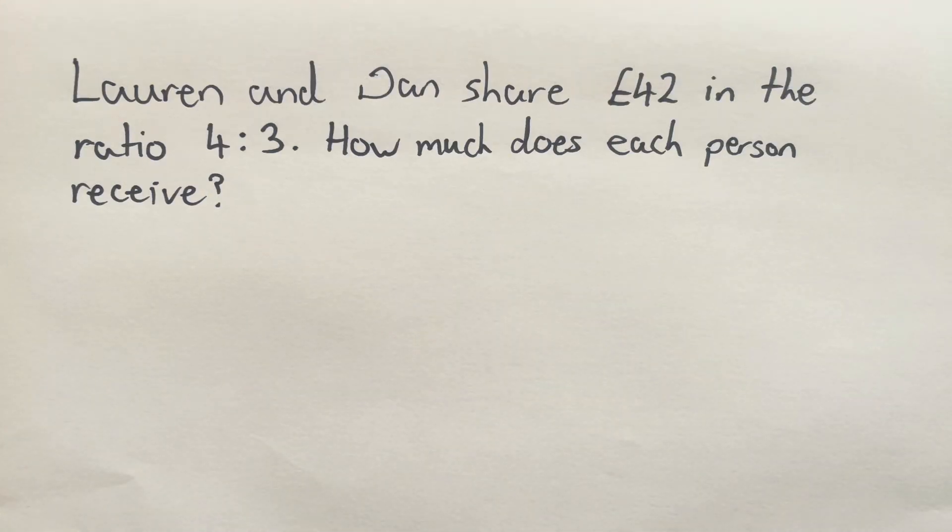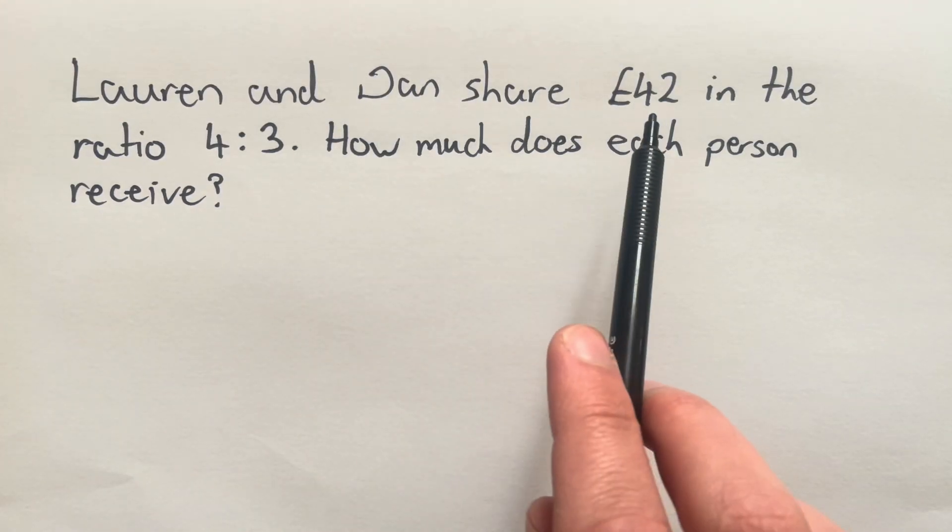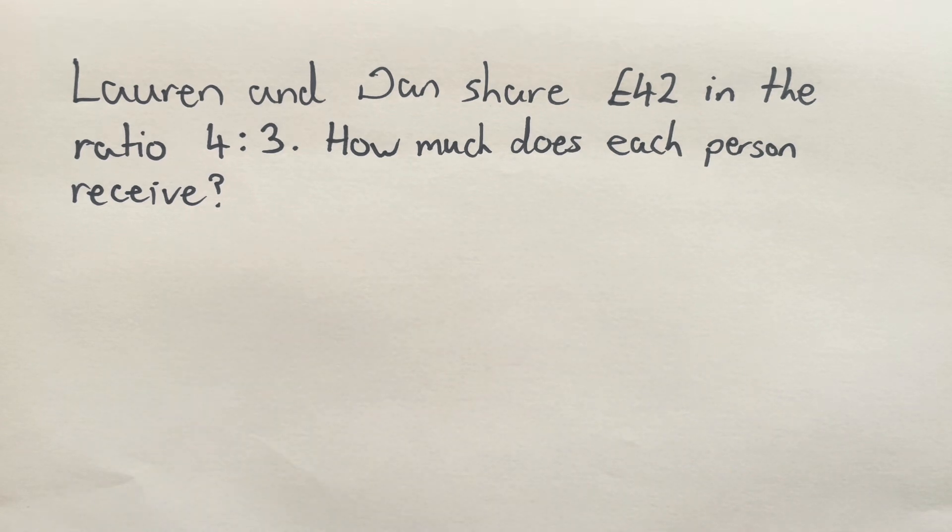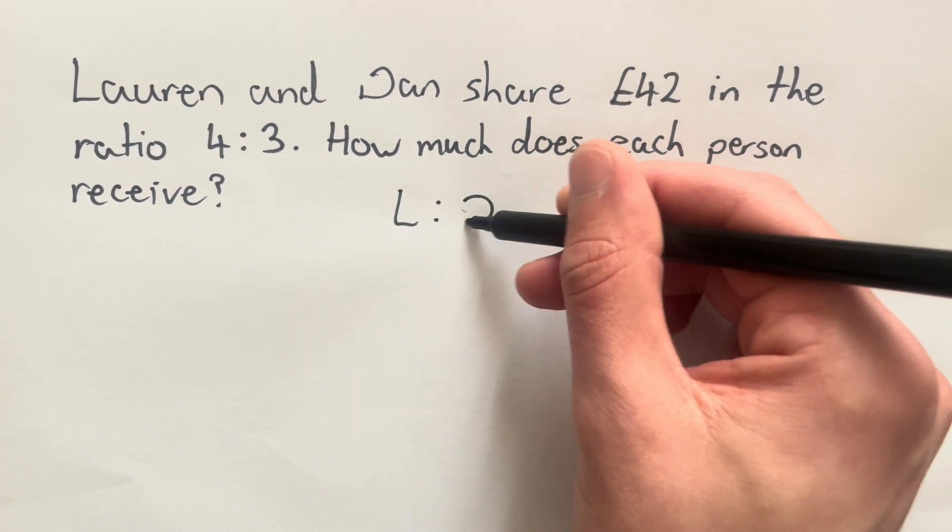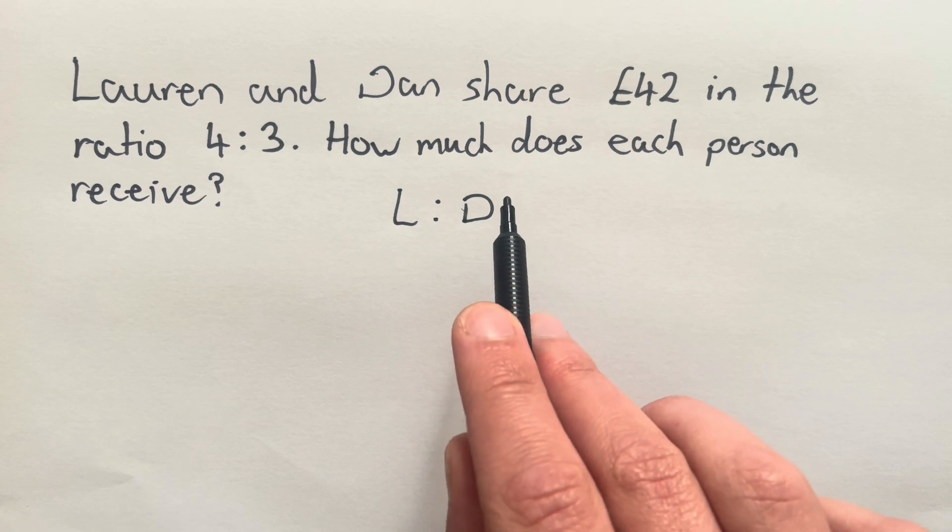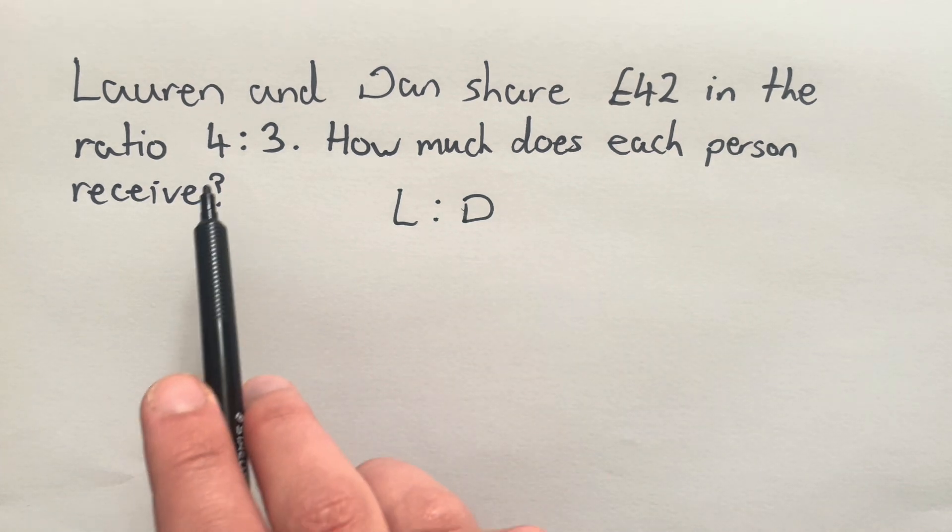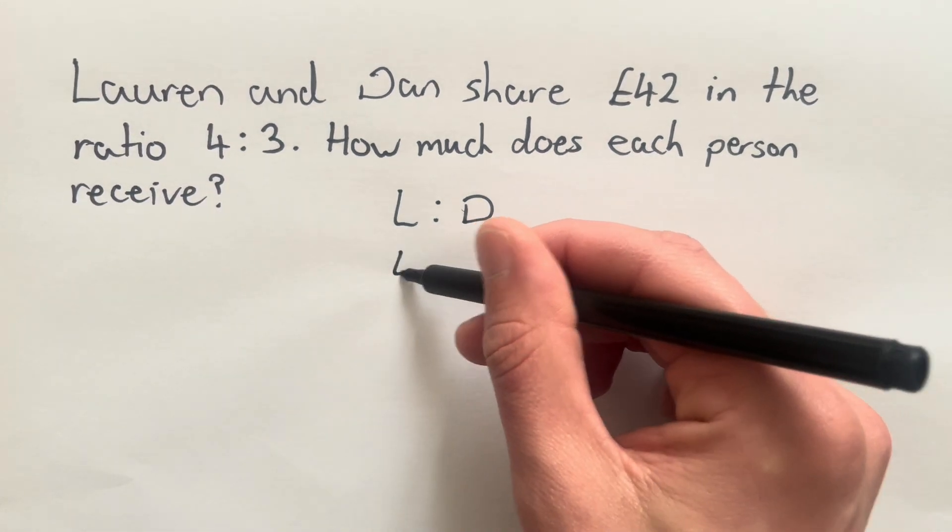In this final question, we're told that Lauren and Dan share £42 in the ratio 4:3. And again, we want to find out how much each person receives. So let's start by labeling our ratio. That's going to be L to D, Lauren to Dan. And I'm going to write the ratio I've been given 4:3, keeping the same order.